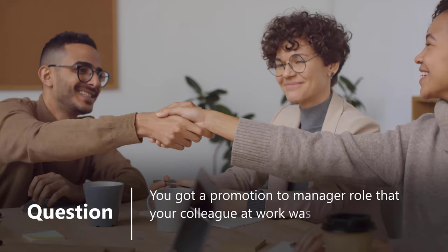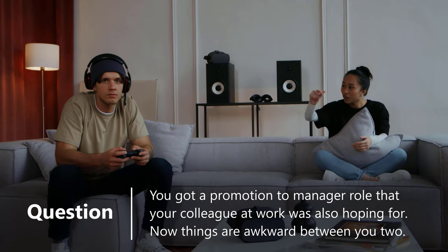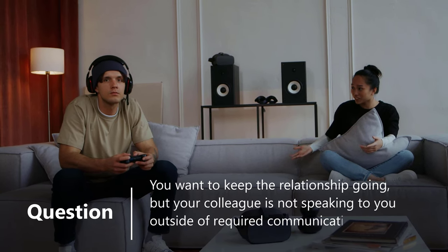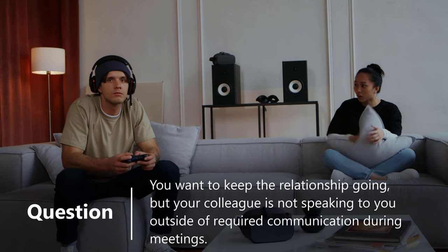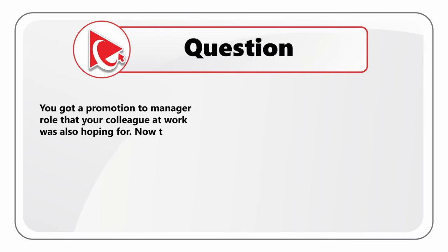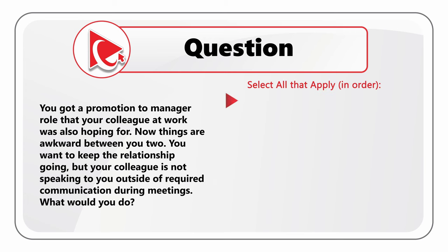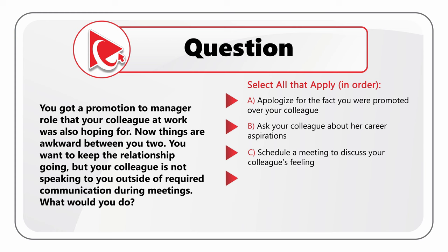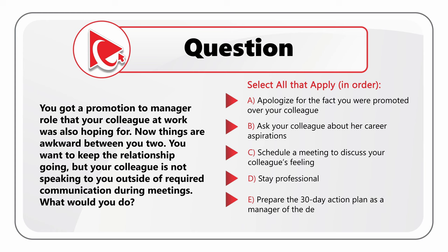You got promoted to a manager role that your colleague at work was also hoping for. Now things are awkward between you two. You want to keep the relationship going, but your colleague is not speaking to you outside of required communications during team meetings. You have five choices, select all that apply in order: A: apologize for being promoted over your colleague; B: ask your colleague about her career aspirations; C: schedule a meeting to discuss your colleague's feelings; D: stay professional; E: prepare a 30-day action plan as manager of the department.